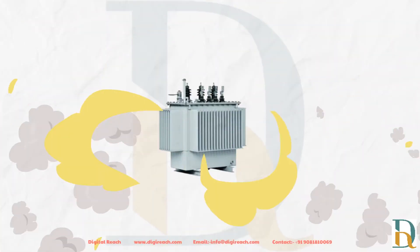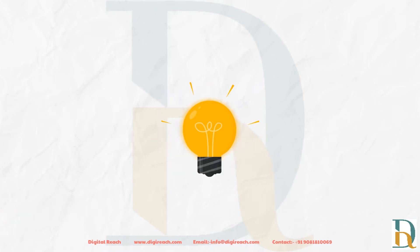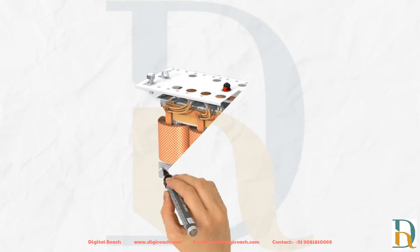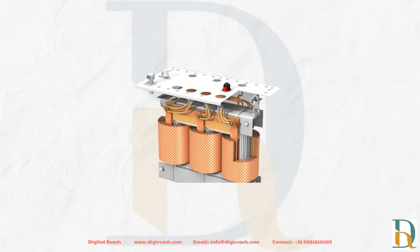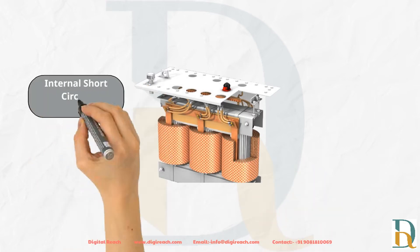This can cause catastrophic consequences resulting in long-term power outages. Chemical and electrical abnormalities such as internal short circuit, high concentration of select gases, thermal overload conditions, and high oil temperature can result in transformer failure.